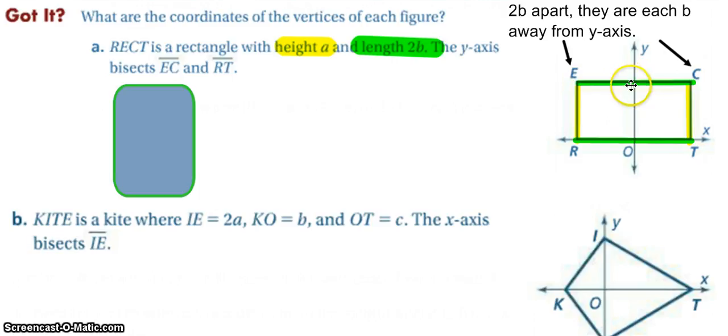So that tells me something about the Y value or the X values for R and E are both B away, and the X values for C and T are both B away, and E and C are both up with a Y value of A. So as I look at my points, point R is at negative B zero because it is sitting on the X axis it has no Y value.